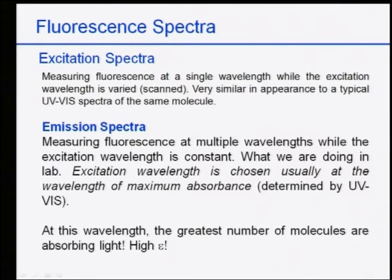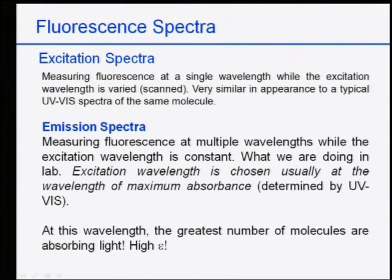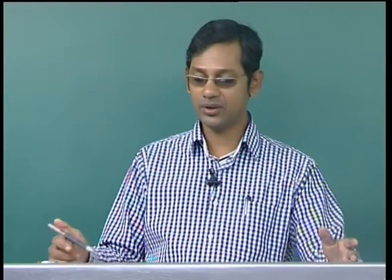There are two kinds of spectra: excitation spectra and emission spectra. The excitation spectrum measures the fluorescence at a single wavelength while the excitation wavelength is scanned — very similar to UV-visible spectroscopy where wavelengths are scanned. The emission spectrum measures fluorescence at multiple wavelengths while the excitation wavelength is kept constant. The excitation wavelength is usually chosen at the wavelength of maximum absorption (λ_max), where the greatest number of molecules absorb, giving the highest ε per Beer-Lambert law.